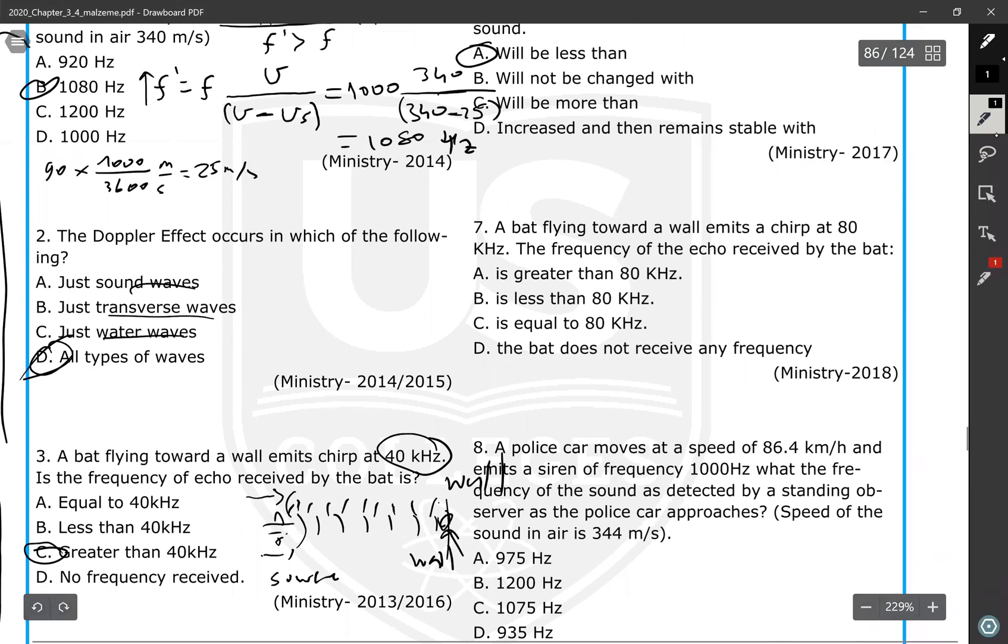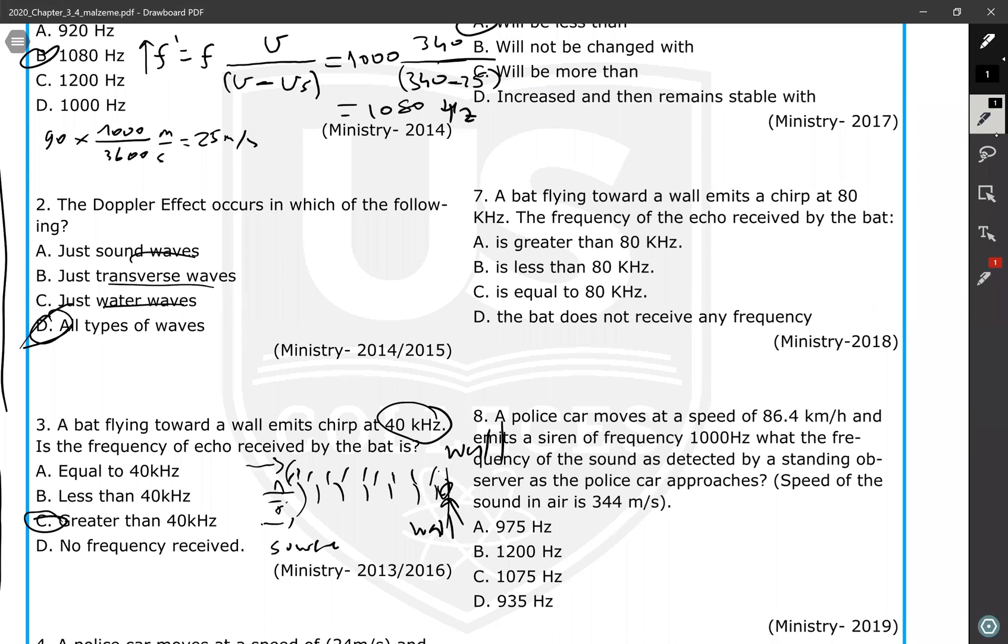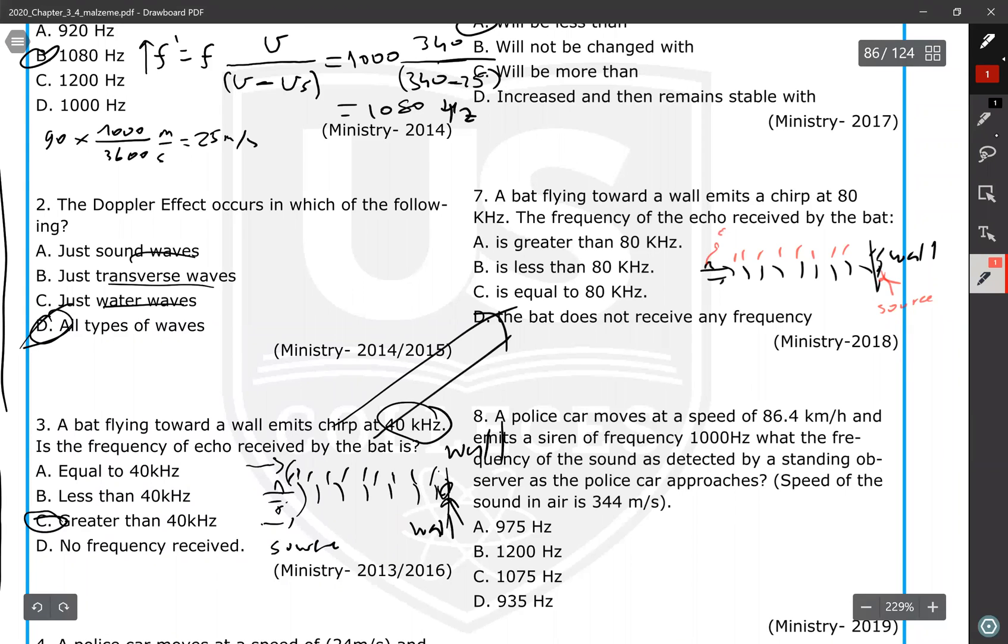A bat flying towards a wall emits a chirp of 80 kilohertz. It's exactly the same as the third question. When the bat is approaching and there is a wall, the bat is somewhere here sending the sound, reflection - sound reflects back. After that, this bat detects that reflected sound. The wall behaves as a source on the way back, and the bat behaves as a listener or observer. Because they are relatively approaching each other - the bat is moving towards the wall - the frequency or the pitch will be greater than 80 kilohertz.